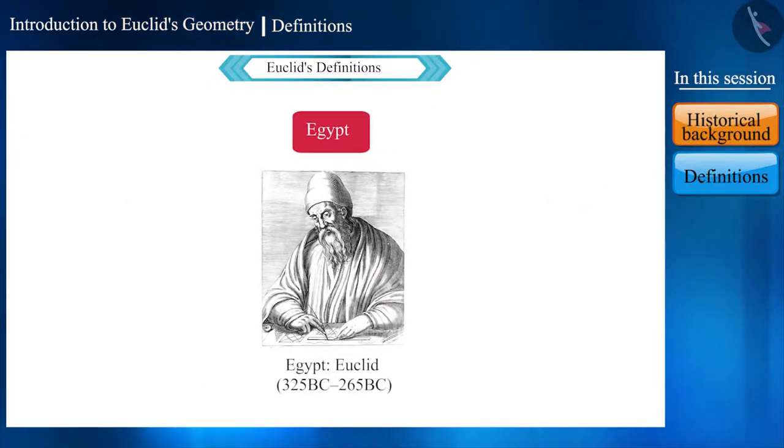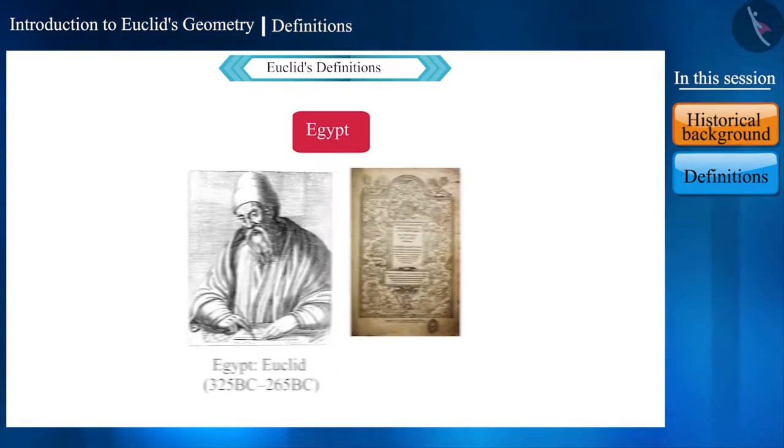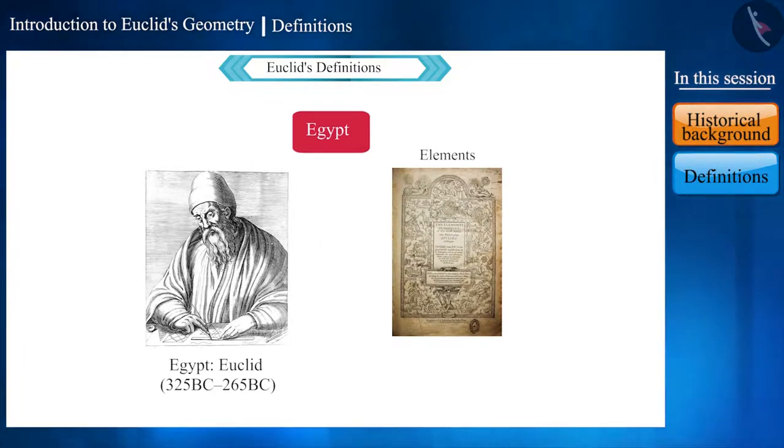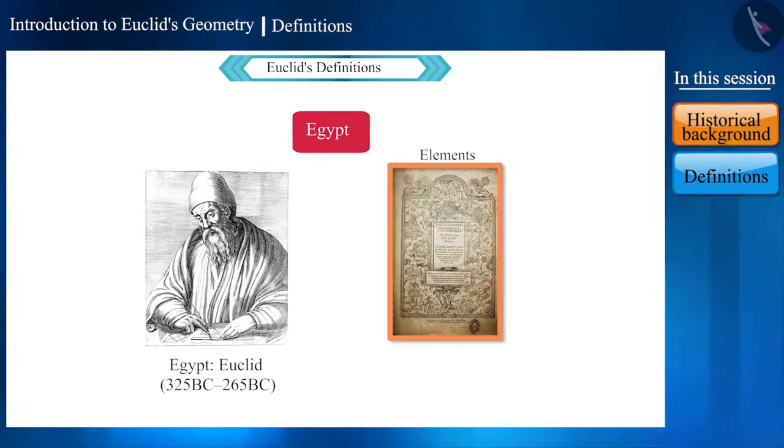Euclid, a teacher of mathematics at Alexandria in Egypt, arranged all these statements briefly as definitions in his book Elements, in which he collected all the knowledge of mathematics known up to that time.